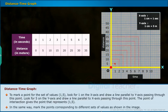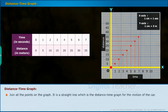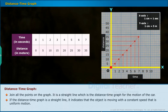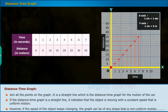In the same way, mark the points corresponding to different sets of values as shown in the image. Join all the points on the graph. It is a straight line which is the distance-time graph for the motion of the car. If the distance-time graph is a straight line, it indicates that the object is moving with a constant speed, that is uniform motion. However, if the speed of the object keeps changing, the graph can be of any shape, that is non-uniform motion.